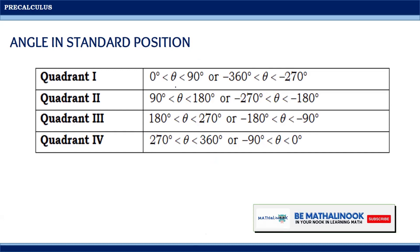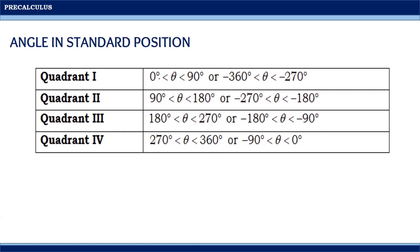If the measurement of the angle is between zero degrees and 90 degrees, then it falls in quadrant one. If the angle measures between 90 degrees and 180 degrees, then it lies in quadrant two. If the measurement of the angle is between 180 degrees and 270 degrees, then it lies in quadrant three. Lastly, if the measurement of the angle is between 270 degrees and 360 degrees, then it lies in quadrant four.